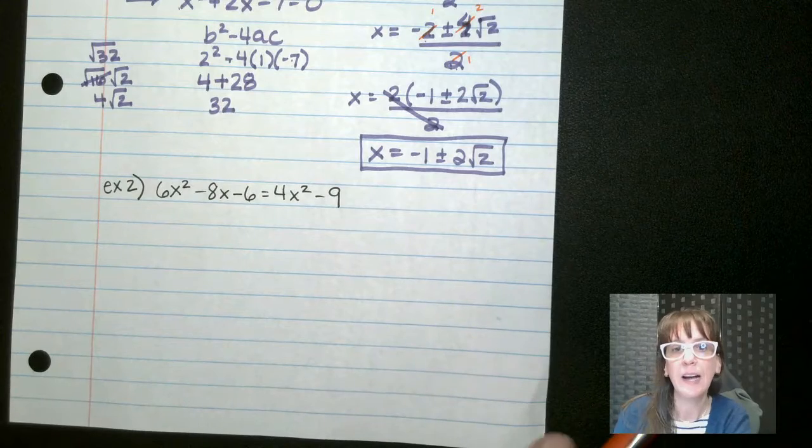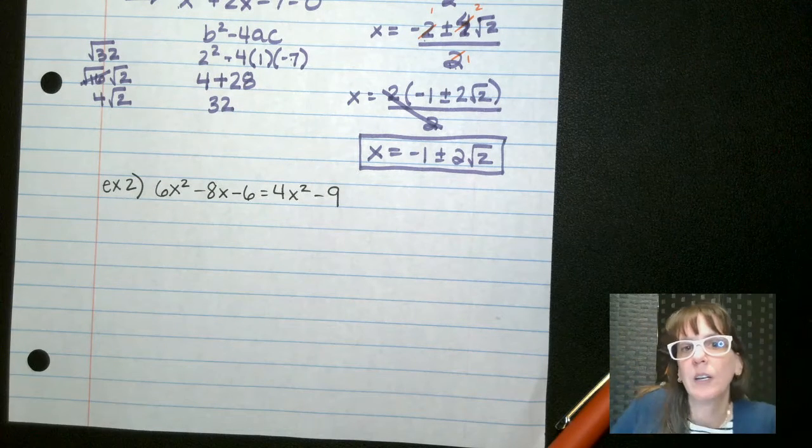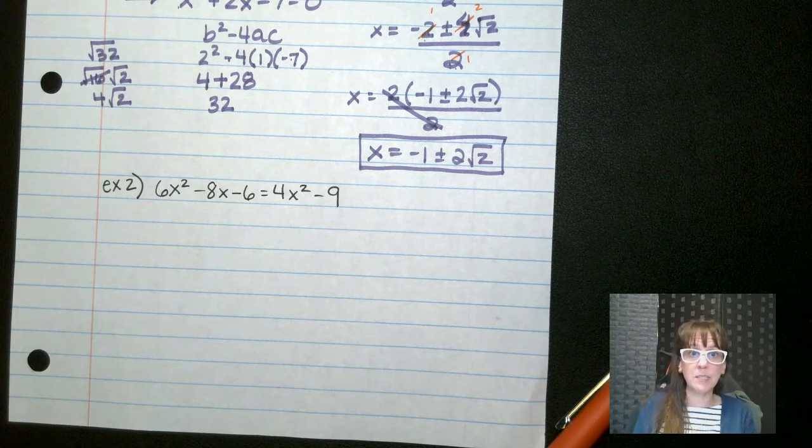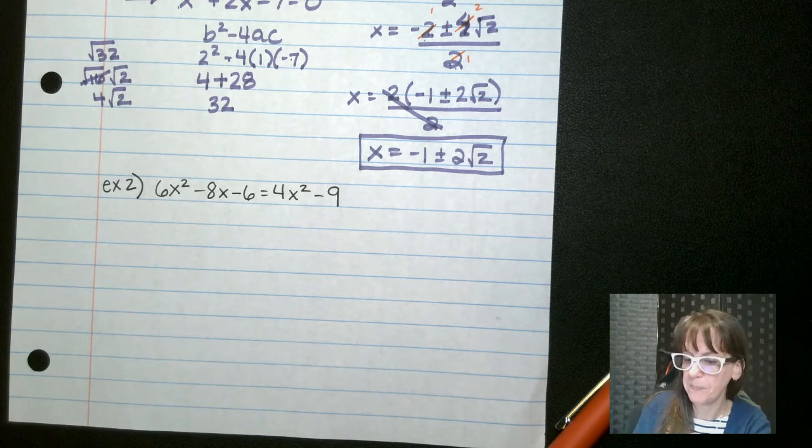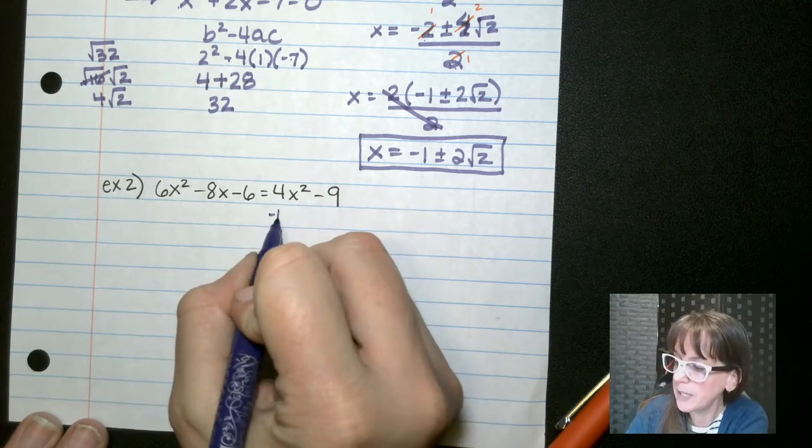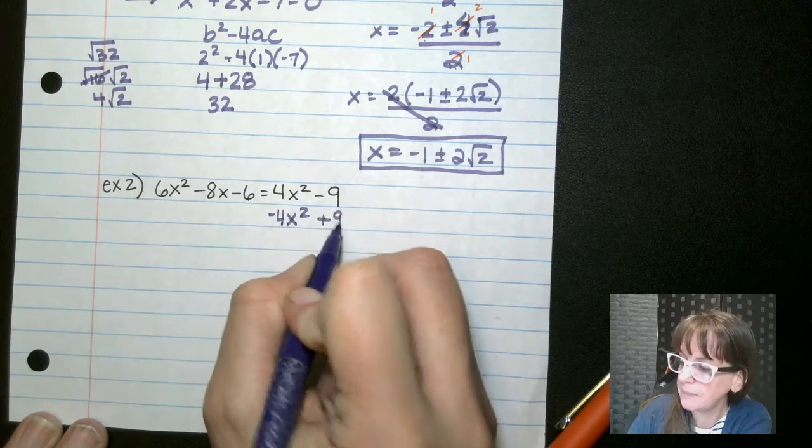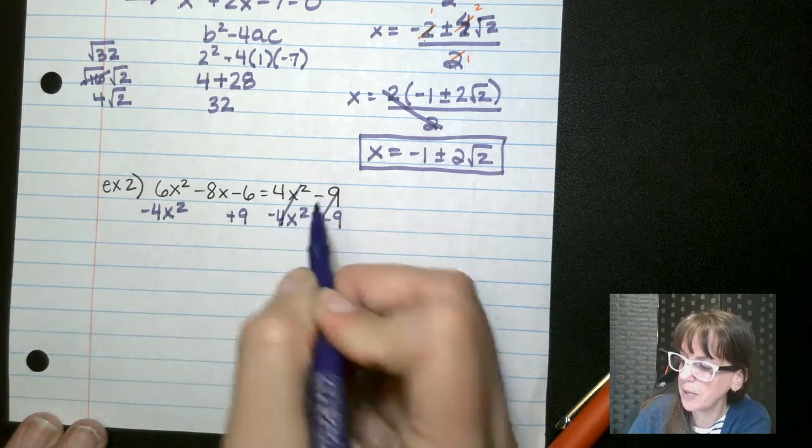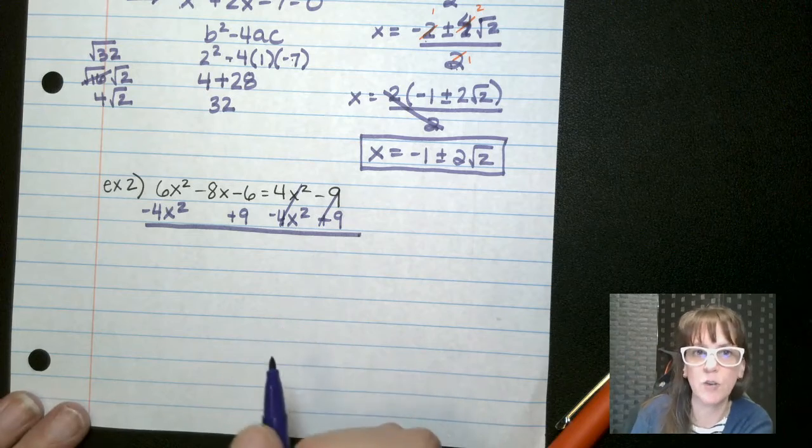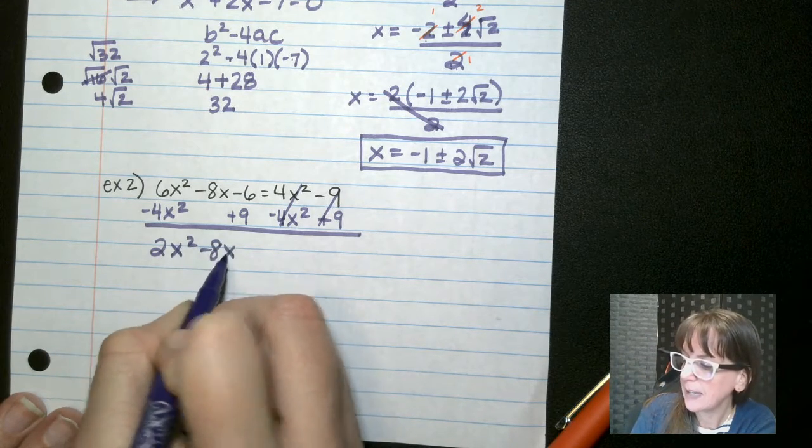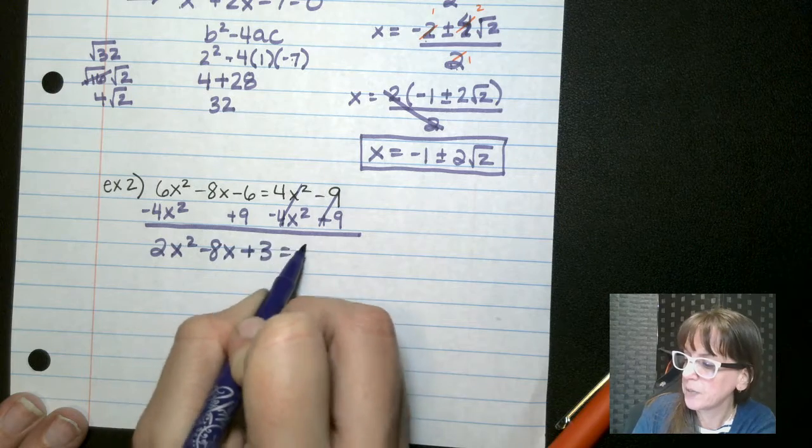All right. So let's try another one. Again, we want to have a positive first exponent, or a positive a. I think you don't need to, but I think it's nice because otherwise you end up with a negative on the bottom. And we want to get everything on one side. So minus 4x squared plus 9, minus 4x squared, and then we'll do plus 9 here. There's a bug flying around my desk that is driving me nuts. So we have 2x squared minus 8x plus 3 equals 0.